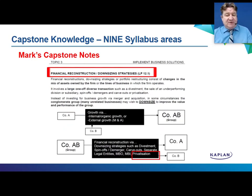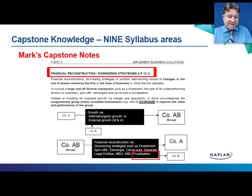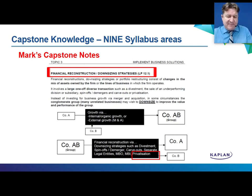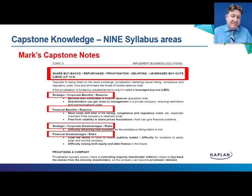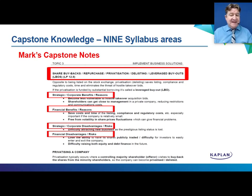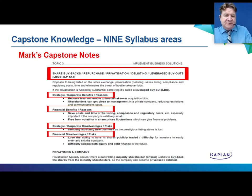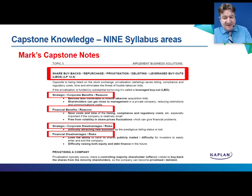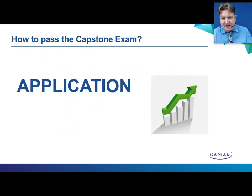In topic three, we start thinking about financial reconstruction, downsizing strategies — of which there are many — divestment, spin-offs, demergers. But as you're going to see in the June 2023 exam, they focused on share buybacks and privatization. In my set of notes, we go into greater detail. This is looking at share buybacks — buying back 100% of the shares to delist, or in other words, take the company off the stock exchange and go into what's known as privatization. You can see strategic corporate benefits, reasons, disadvantages, and risks.